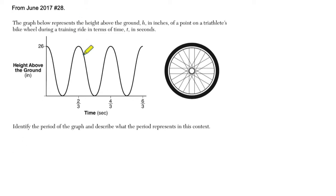Alright, so they tell us right away that in this graph, it represents the height above the ground h in inches, so here's the height, of a point on a triathlete's bike wheel during a training ride in terms of time t seconds. Okay, what does that mean? Well, let me switch over to a different pen here.